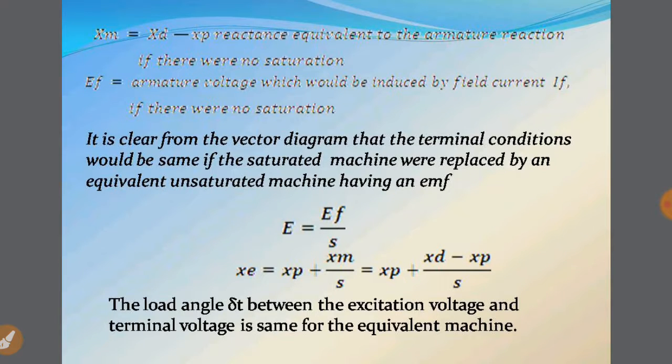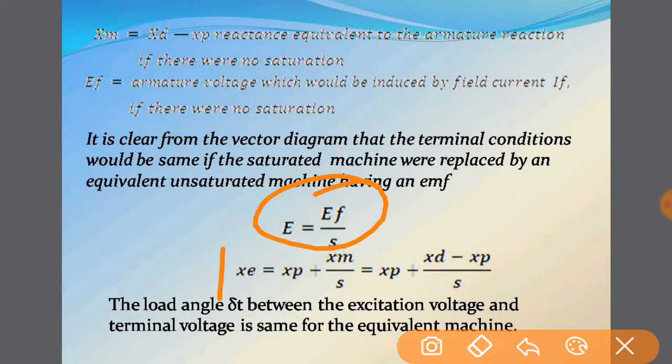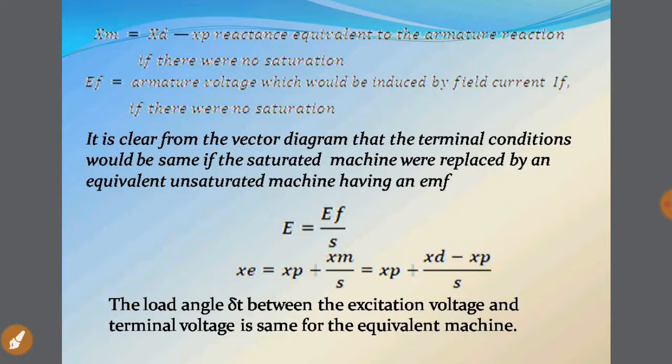So what we got over here. We got here which we utilized XM, as you remember, as equal to XD minus XP, which was the reactance equivalent to the armature reaction. We had told you previously that it is the condition where we have no saturation. And we arrived at the point of EF, which was the armature voltage induced by field current. Again, low saturation condition. So this we have already seen from the vector diagram. This relation E is equal to EF upon S. Also this relation has been given to you to depict more clearly the values and the relations between the different reactances. Here XC will be your equivalent reactance.